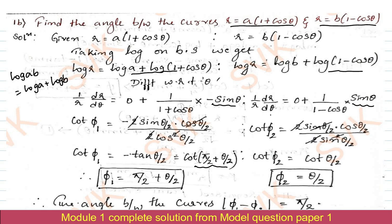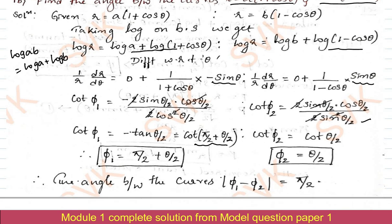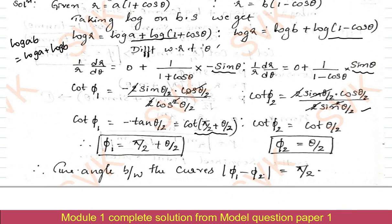Similarly, for the second curve: sinθ/(1 − cosθ) = 2sin(θ/2)cos(θ/2) / (2sin²(θ/2)). The 2sin(θ/2) cancels, giving cos(θ/2)/sin(θ/2) = cot(θ/2), so φ₂ = θ/2. The angle between the two curves is |φ₁ − φ₂| = |π/2 + θ/2 − θ/2| = π/2. Since the angle is π/2, the two curves intersect each other orthogonally.